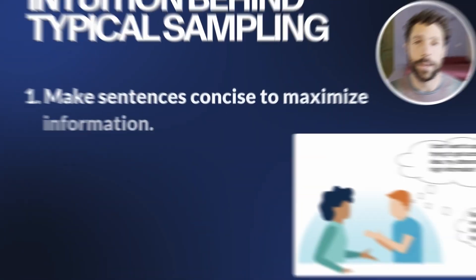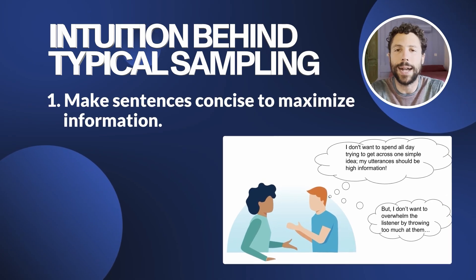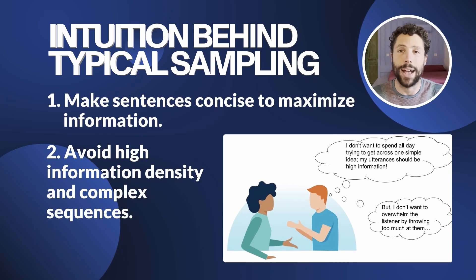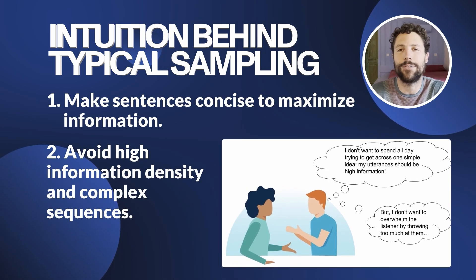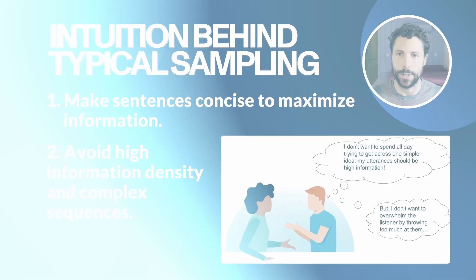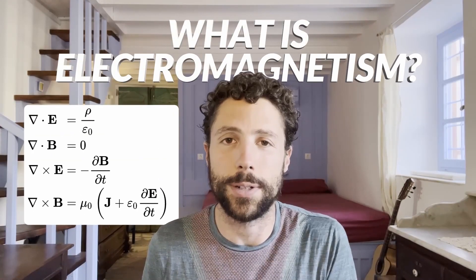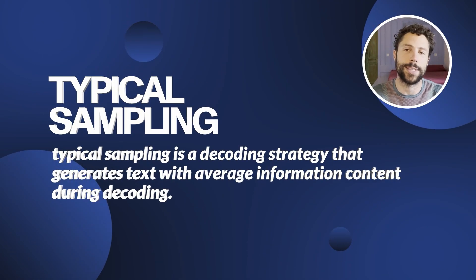If natural language can be cast as a process of information transmission, it may be reasonable to assume that for effective communication, information should be encoded in text sequences at an optimal rate. Typical sampling builds upon two principles: first, keep sentences short and information dense — maximize the amount of information conveyed in a given message; second, avoid moments of high information density — avoid excessively complex or surprising sequences that can be too difficult for the listener to process. Typical sampling proposes generating sentences with the expected information content given prior context, to produce text that is informative enough to be engaging, yet not so complex as to overwhelm the reader.